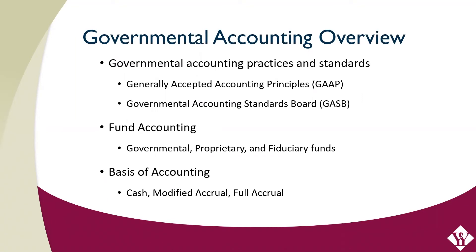Governmental entities such as public libraries are fundamentally different from for-profit businesses, and therefore the accounting and financial reporting is different. The Governmental Accounting Standards Board, the GASB, is the primary standard-setting body for governments and is recognized as the official source of generally accepted accounting principles, commonly referred to as GAAP, for state and local governmental entities. In order to meet the evolving needs of governmental financial statement users, the GASB issues standards and other communications that result in improved accounting and financial reporting. GASB standards and guidance can be found on their website at GASB.org.